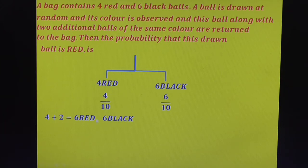Now, what is the probability to get a red ball in this case? Since the final condition depends on red, we need the probability of red here. The red ball count is 6, and the total is 6 plus 6, which is 12. Therefore, the probability to get a red ball is 6 by 12.